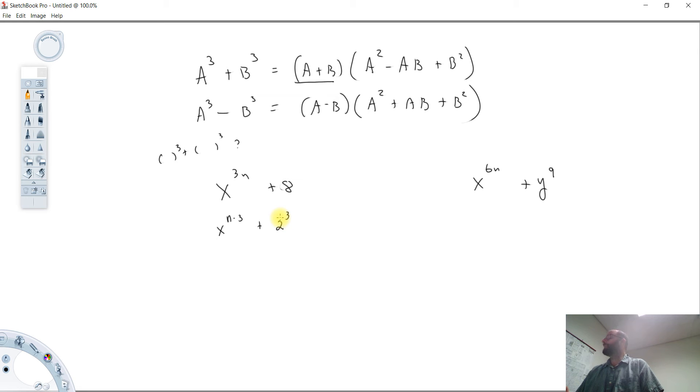We've done two algebra steps there. Okay, now when we take a look at this, x to the n times 3, that's equal to x to the n cubed plus 2 to the 3rd. Okay, because remember, when you raise a power to a power, you multiply our exponents.